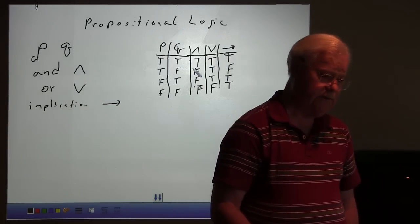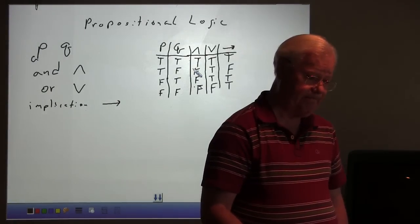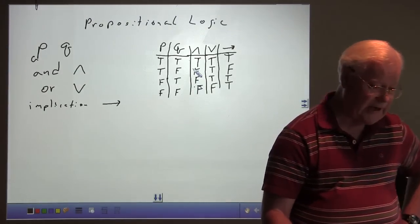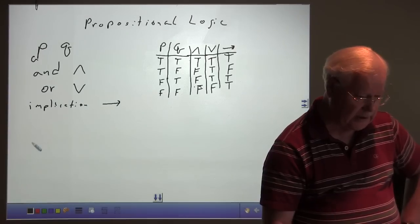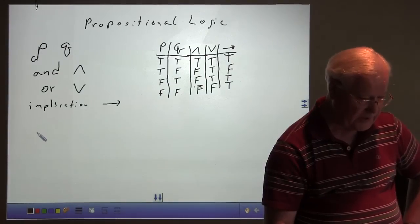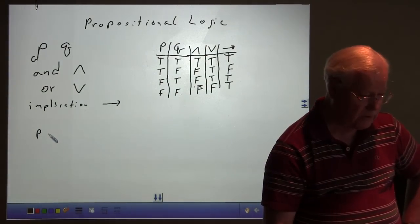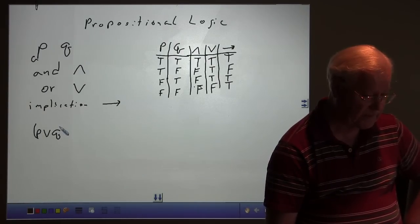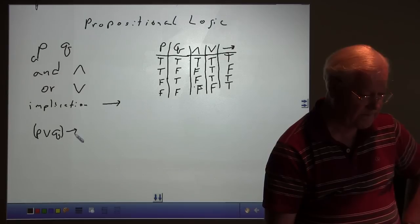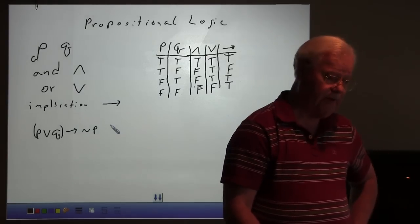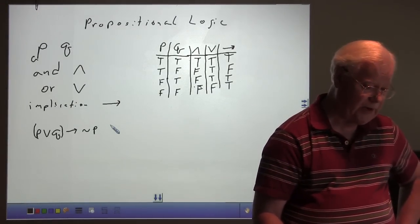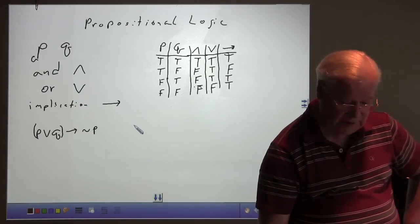Those are the operations for propositional logic. How do we then analyze a statement that might go further than this? What if we had the statement, P or Q, in parentheses, implies not P. Not is a new thing. Not just means the reverse of, just as the negative sign does in arithmetic. But let's do a truth table on this one.